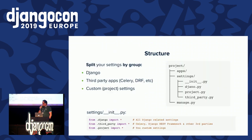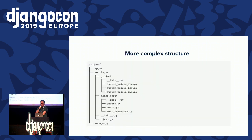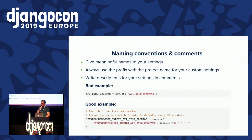A few words about structure. We recommend to split your settings, but not by environment — by groups. In this case, you can differentiate Django, third-party, and your custom settings. And if your project grows, you can implement each of these files as a package and split it more granularly.